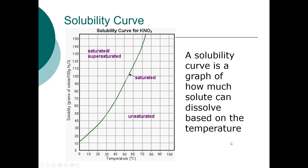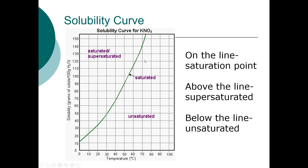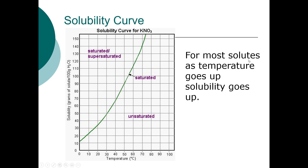A solubility curve is a graph of how much solute can dissolve based on temperature. If you're on the green line, you're at the saturation point. Above the line — say 30°C with 90 grams dissolved — you're in the supersaturated zone. Below the line — 30°C with only 10 grams dissolved — you're in the unsaturated zone and can still add more. For most solutes, as temperature goes up, solubility goes up.